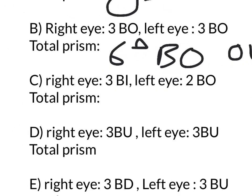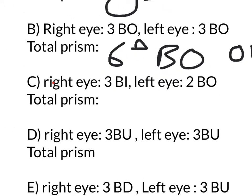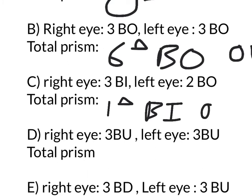For C, the right eye is 3 base in and the left eye is 2 base out. In your mind's eye, or if you draw it out, you can see that the prisms are pointing in the same direction. So you subtract them, and you're left with just 1 prism diopter base in in the right eye.